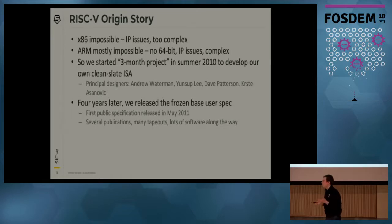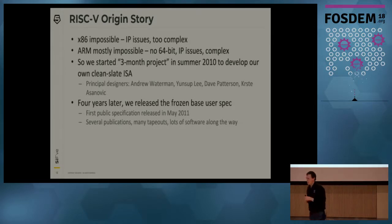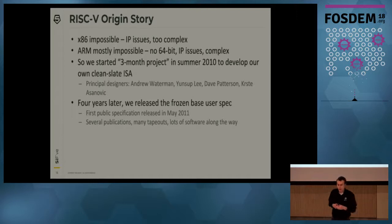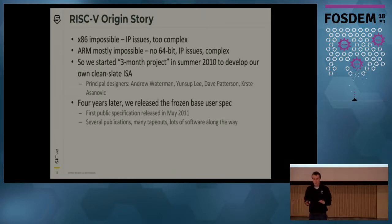Since x86 and ARM really aren't viable, we started a three-month-long summer research project to design our own ISA. Four years later we managed to actually release the base user ISA specification, which was frozen. It took four years because we were doing a lot of things in the meantime — one of those things was taping out chips.